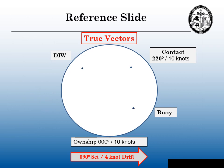This is going to be my reference or base slide. Our own ship is going to be going 000 degrees at 10 knots, heading up to the northwest. We're going to have a contact that's dead in the water. To the northeast, we're going to have a contact going 220 degrees at 10 knots. And down to the southeast, a buoy that's attached to the seabed. We're also going to have a current — a 090 degrees set at a drift of 4 knots.